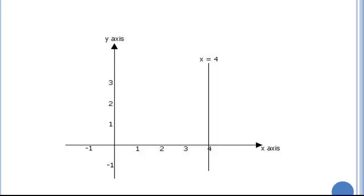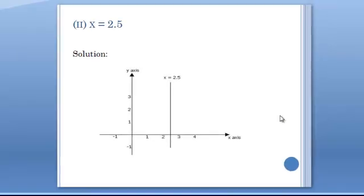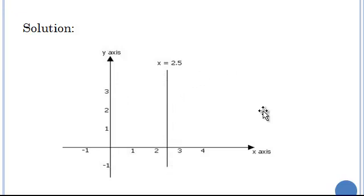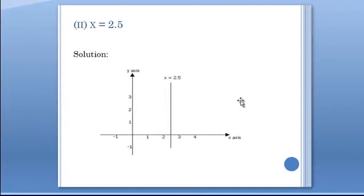Part 2 asks us to draw the graph of the relation x equals 2.5. It's the same procedure: we identify 2.5 on the x-axis and draw a line through that point parallel to the y-axis. Note that when drawing graphs of relations of the form x equals a number, the graph will always be parallel to the y-axis.